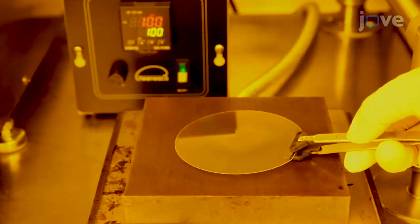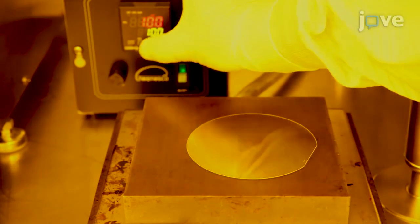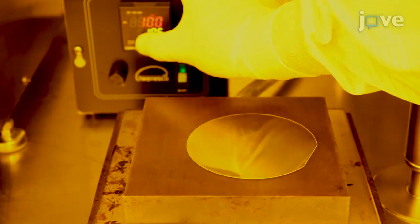Bake the wafer by placing it on a hot plate at 100 degrees Celsius. Increase the hot plate temperature to 150 degrees Celsius, and maintain that temperature for 1 minute.